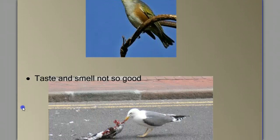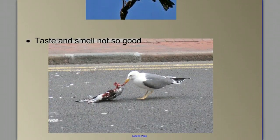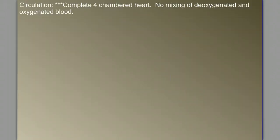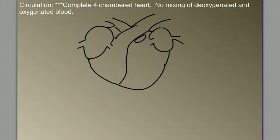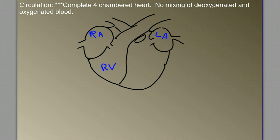Their sense of taste and smell, however, is not as good. Now let's move on to the circulatory system. Birds have a complete four-chambered heart — there's no mixing of oxygenated and deoxygenated blood. Here's my four-chambered heart: we have the right atrium on the animal's right side, the right ventricle, a left atrium, and a left ventricle. The two sides of the heart are completely separated from each other, so we have no mixing of oxygenated and deoxygenated blood.